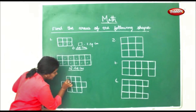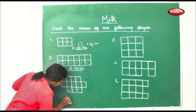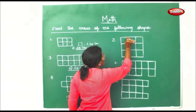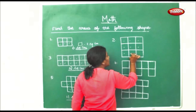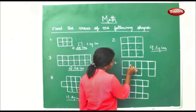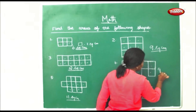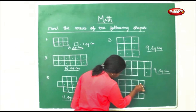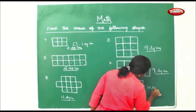Again here: one, two, three, four, five, six, seven, eight, nine, ten, eleven — so this will be 11 square centimeters. And this next shape: counting gives us 9 square centimeters. Here again: one, two, three, four, five, six, seven, eight, nine, ten, eleven — 11 square centimeters.